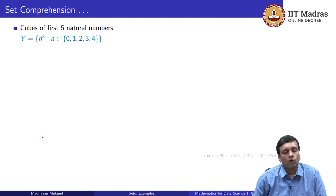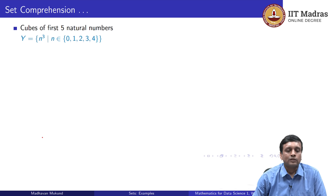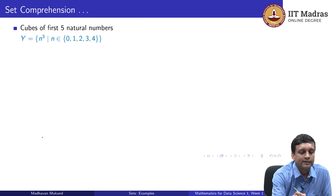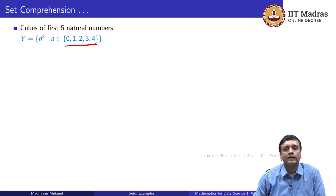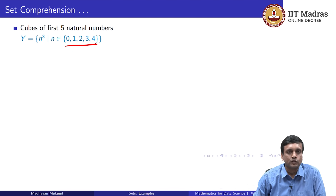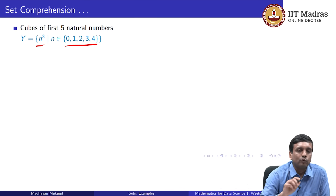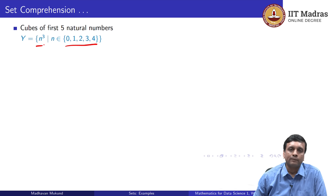Let us see why we would actually want set comprehension notation. Consider extending our first example of squares of even numbers to cubes — a cube is a number multiplied by itself 3 times. If we want the cubes of the first 5 natural numbers, we can write it out explicitly: generate 0, 1, 2, 3, 4 — remembering that in our terminology natural numbers start with 0 — and transform each n to n cubed without any filtering.